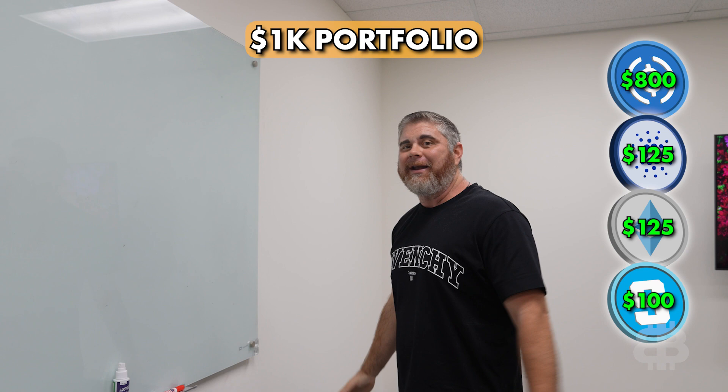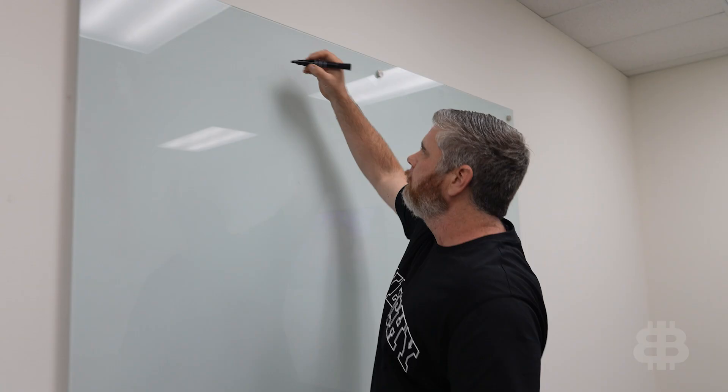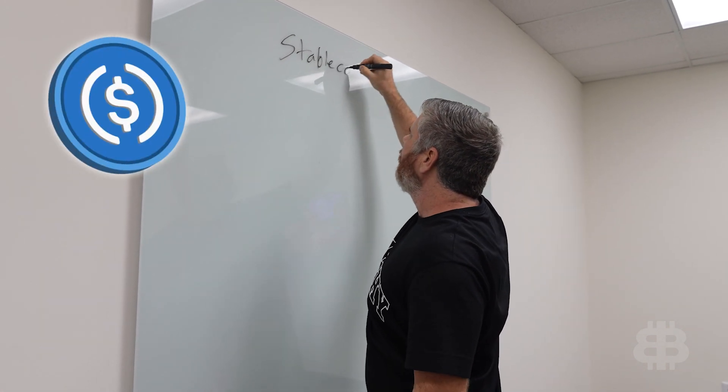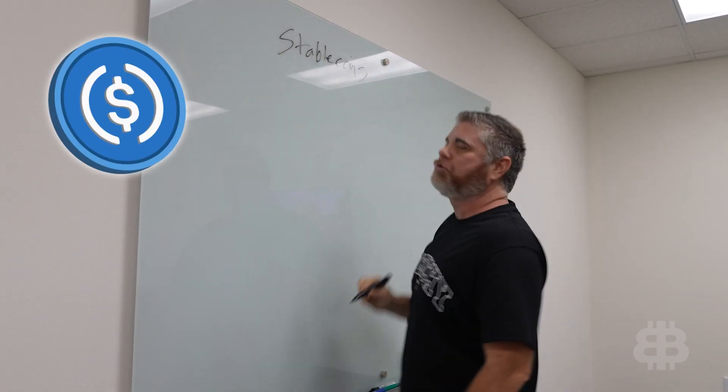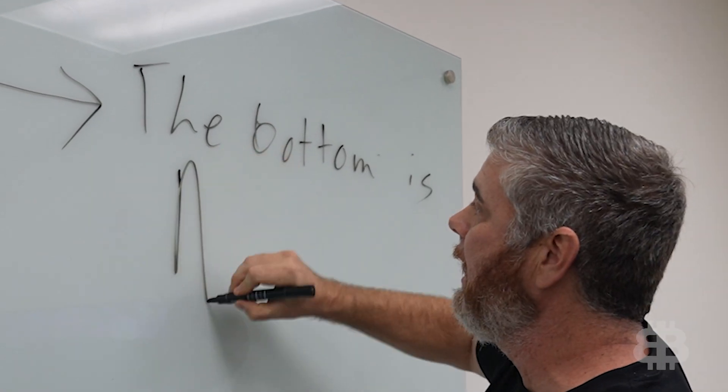We can't deploy the majority of our capital, right? That's why we're keeping the majority in stablecoins. Why are we doing this? Why are we keeping the majority in stablecoins? The bottom is not in.